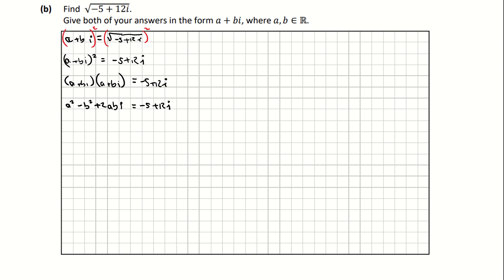I'm going to use my identities and pair up the reals with the reals and the imaginaries with the imaginaries. So I have a squared minus b squared is equal to negative 5. And from the imaginary parts, I have positive 2abi is equal to 12i.